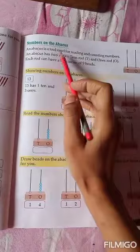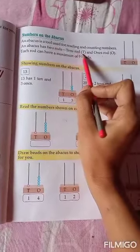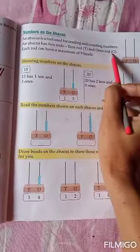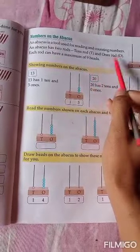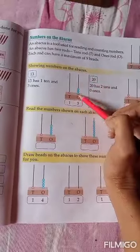it is called rods. What do they say? Rods. Tens rod, T, and ones rod, O. This is called tens and this is one.